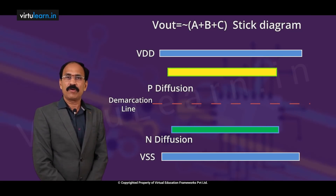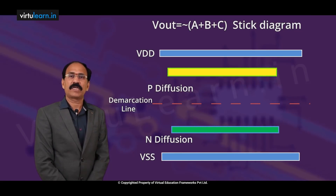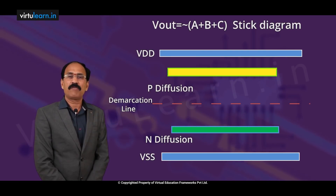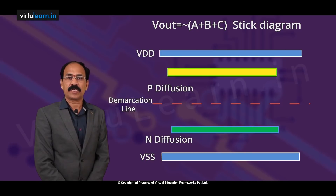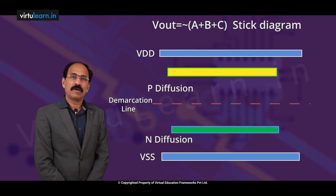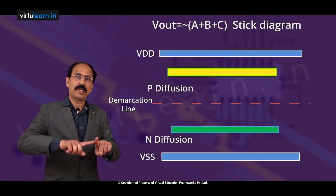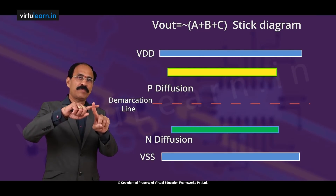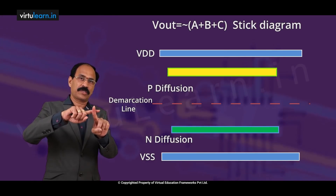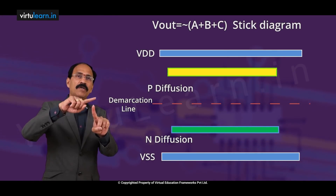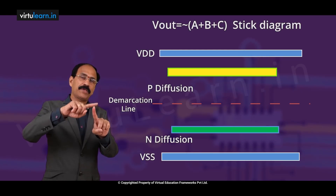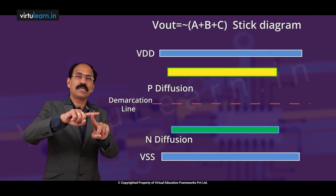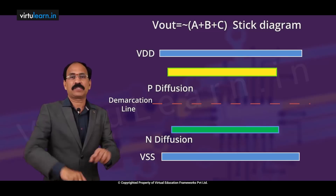For P-MOS transistors we have taken yellow diffusion, and for N-MOS transistors we have taken green diffusion — N-plus diffusion. Now polysilicon: whenever we have crossing of N-plus diffusion with polysilicon, we get a transistor. Similarly, whenever we have P diffusion crossing or overlapping with polysilicon, we get P-MOS transistors.